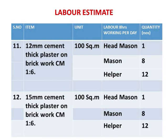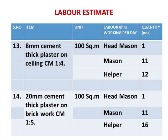Moving on to plastering, different thicknesses of plaster are covered. The thickness of plaster — whether 12 mm or 15 mm — doesn't greatly affect the labor coefficient; only the material will slightly vary. We are working out only the labor constants here. This includes 8 mm thick plaster on ceiling and 20 mm cement thick plaster on brickwork, which is mostly used in external wall plastering.